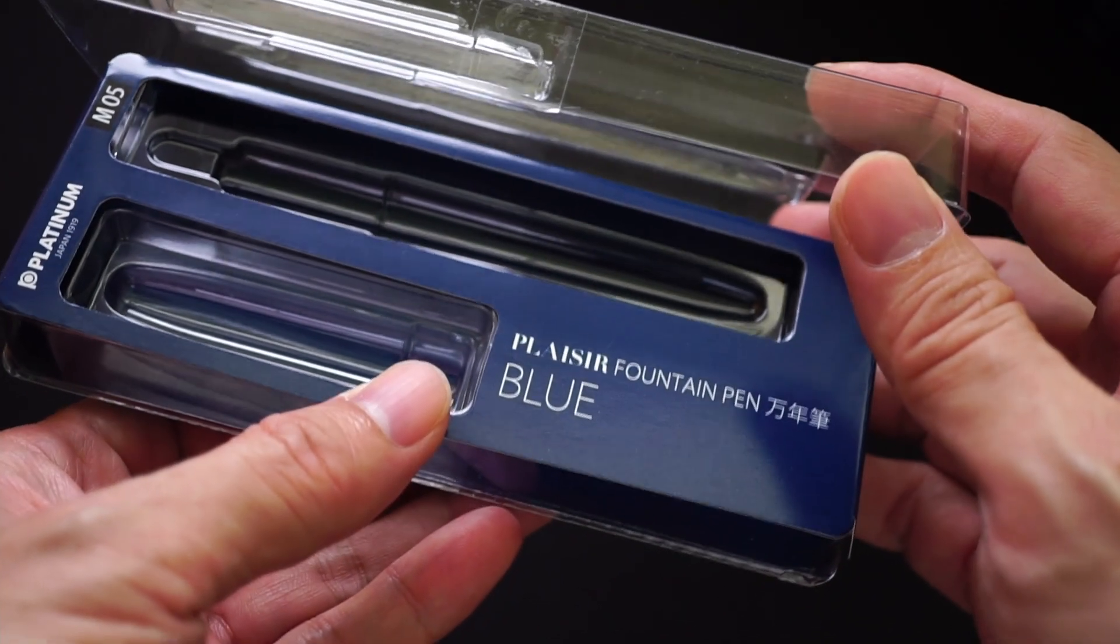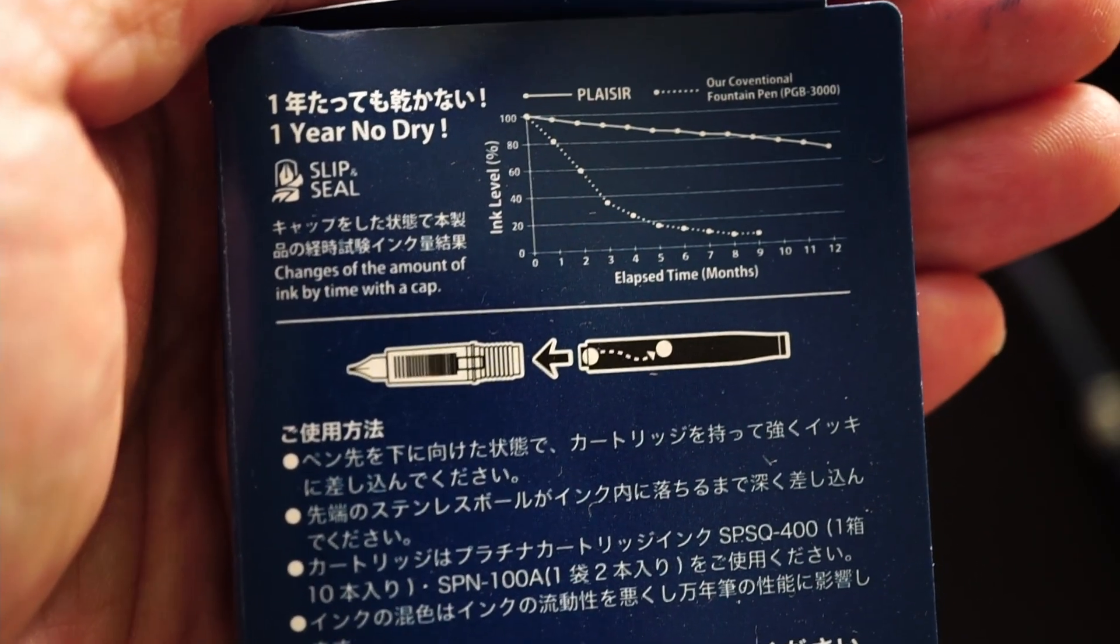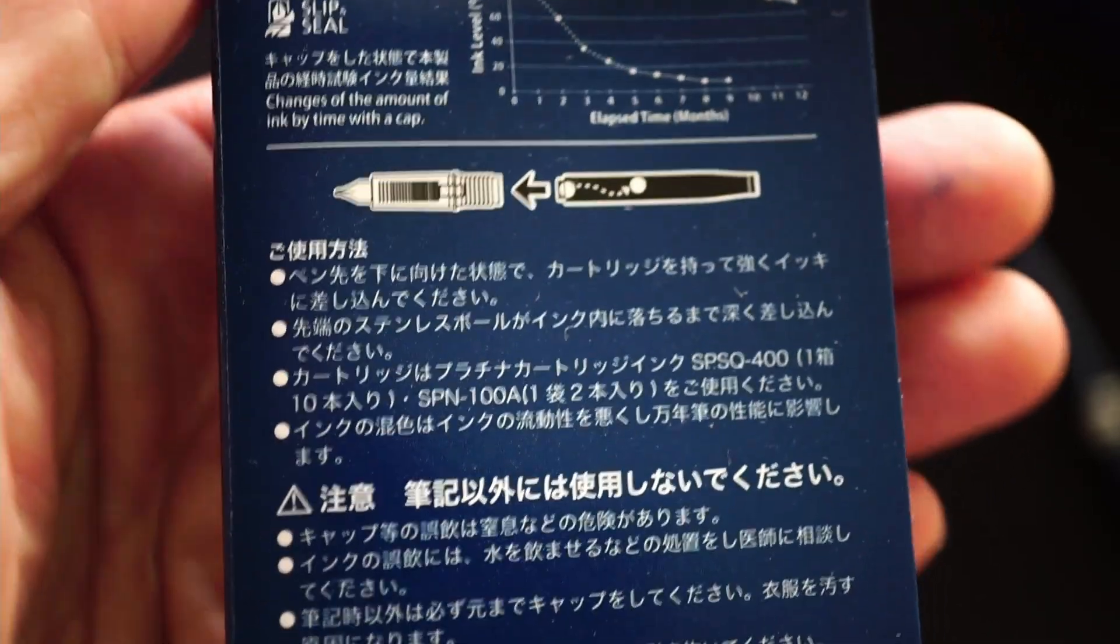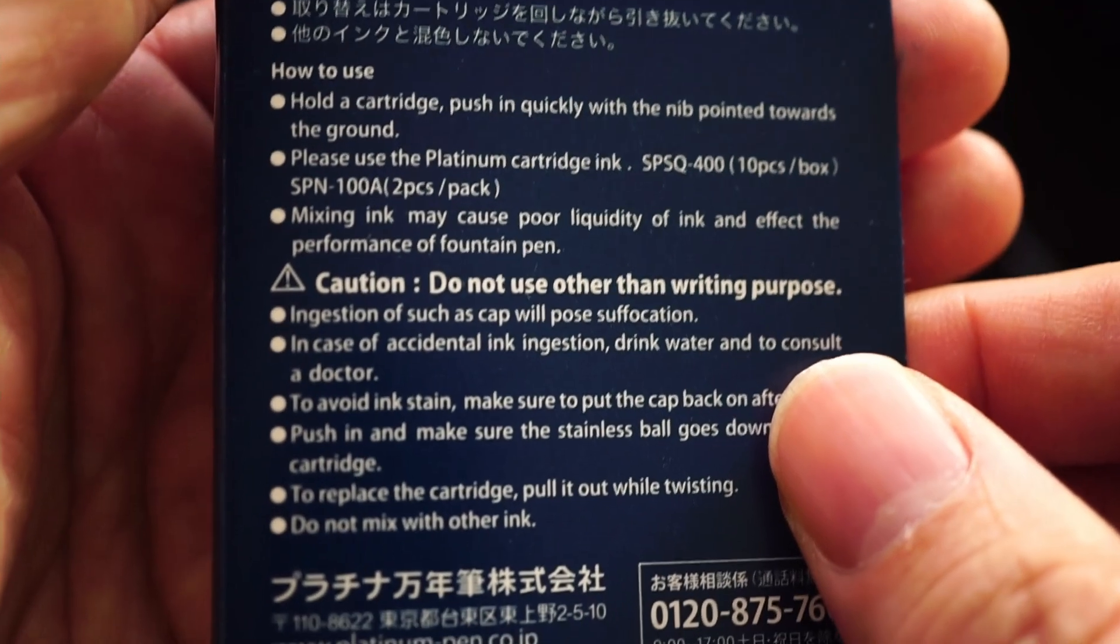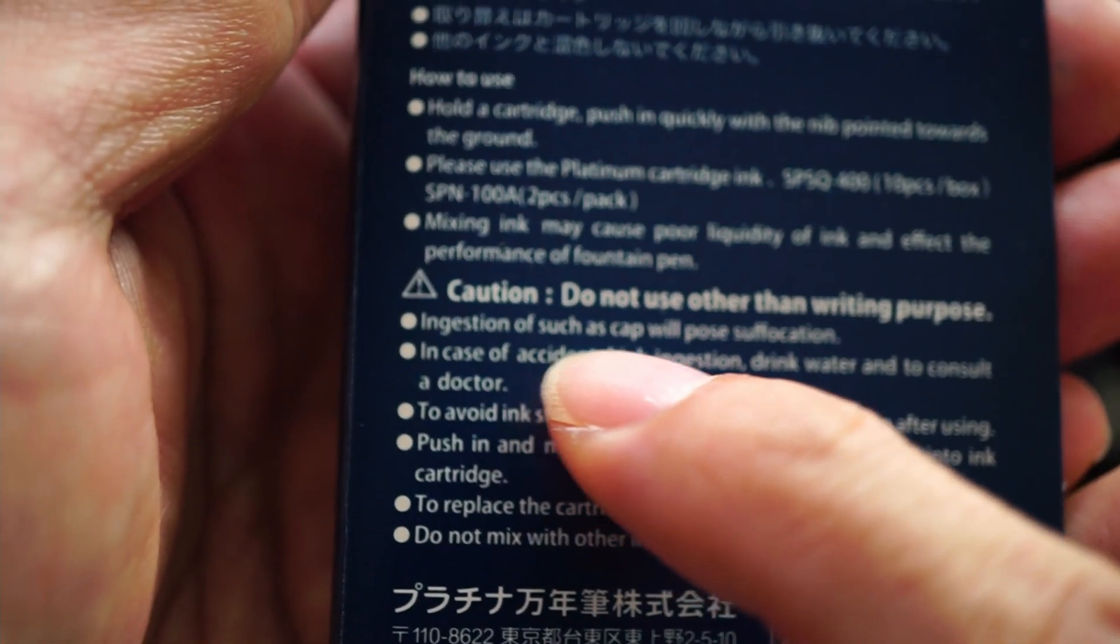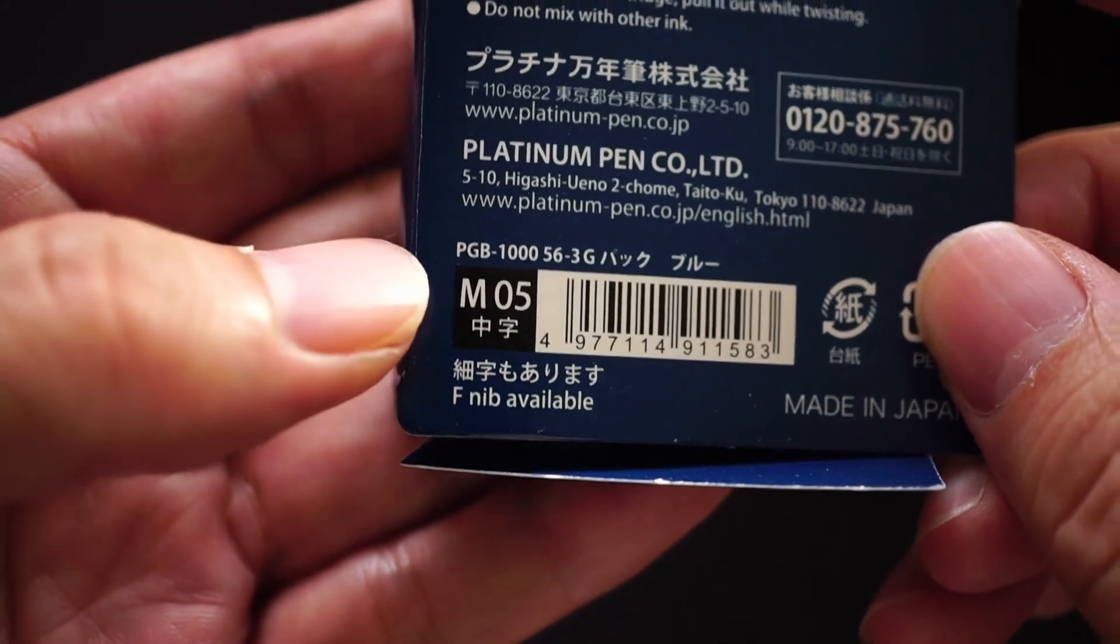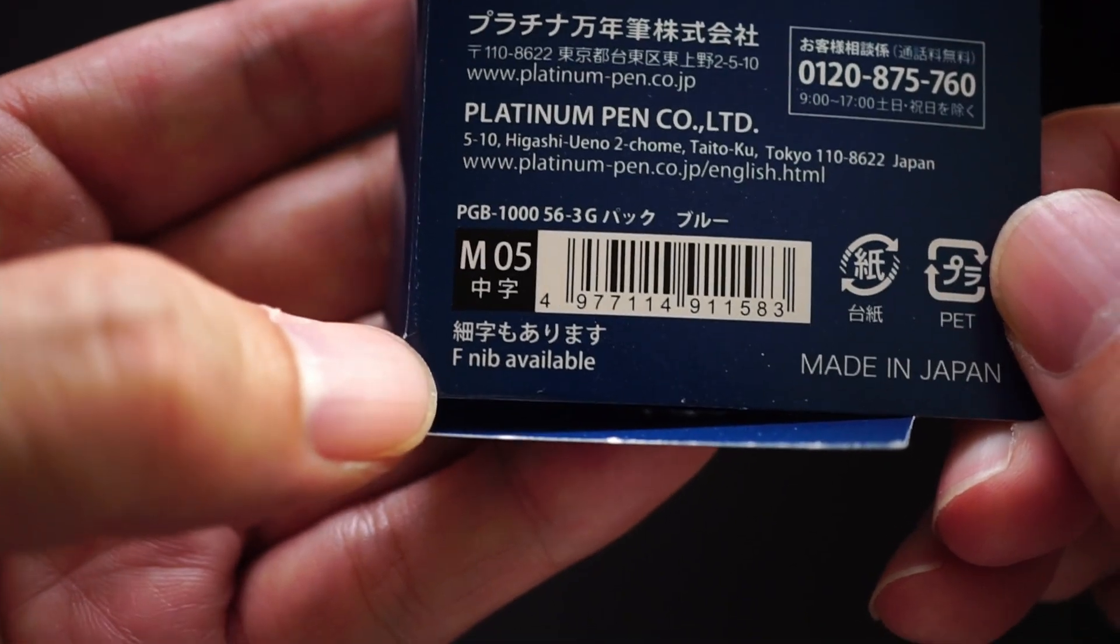One other thing before I do the writing sample is to show you the packaging that the pen came with. It was just a plastic box. As you can see, it's Placer fountain pen blue. And inside the box, pretty much it's just a mention of that Slip Seal mechanism that you can actually leave the pen for one year without drying out, never tried that yet. And some other kind of interesting instructions like ingestion of the cap will cause suffocation, which is interesting. I bought the medium as I mentioned earlier on and the fine nib is also available.